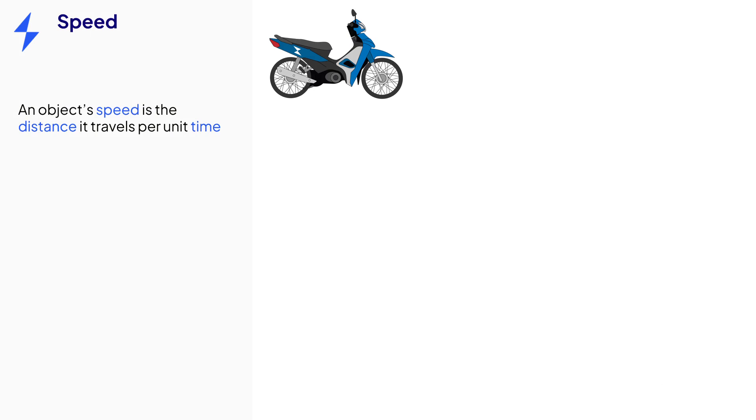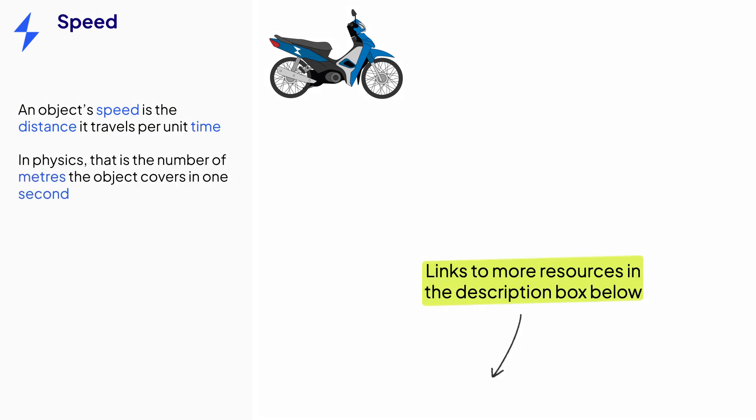That might be one second, one minute, or one hour. The standard way speed is measured in physics is by how many meters an object travels in one second.